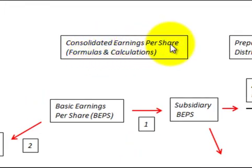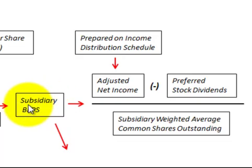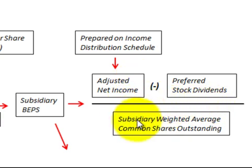We're going to be looking at consolidated earnings per share, formulas, and calculations. Starting with basic earnings per share for the subsidiary: their formula would be the adjusted net income minus the preferred stock dividends of the subsidiary. The adjusted net income comes off the income distribution schedule for the consolidation, and then we divide by the subsidiary's weighted average common shares outstanding. That's the subsidiary's basic earnings per share formula.